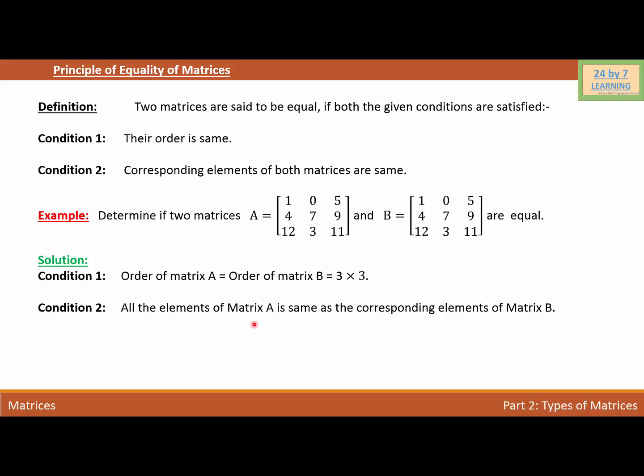So we can say since all the elements of matrix A is same as the corresponding elements of matrix B and both matrices A and B are satisfying both conditions, we can say matrix A is equal to matrix B.